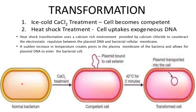During heat shock transformation, a calcium chloride-rich environment is used to counteract electrostatic repulsion between the plasmid DNA and the bacterial cell membrane. A sudden increase in temperature creates pores in the plasma membrane of the bacteria, allowing plasmid DNA to enter inside the cell when given a temperature of about 42 degrees centigrade for two minutes, enabling transformation to take place.